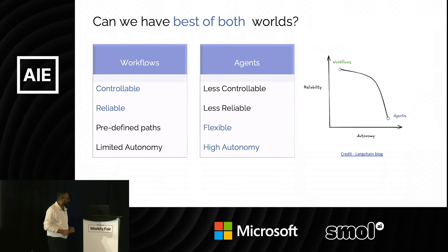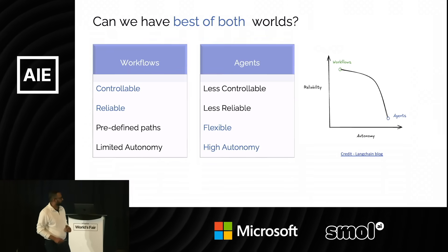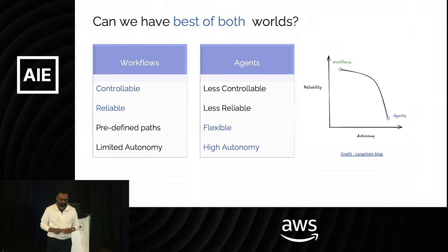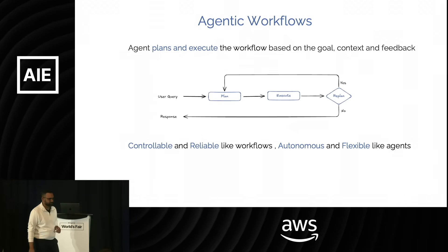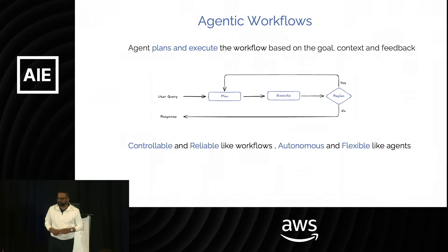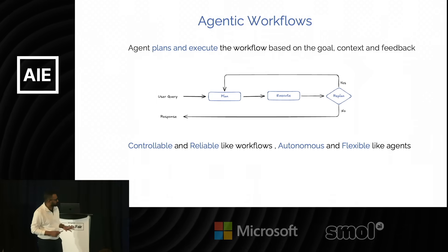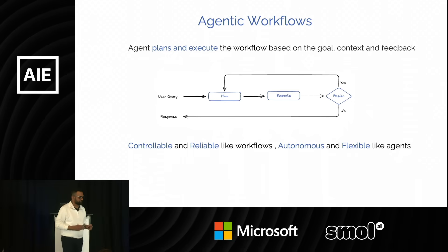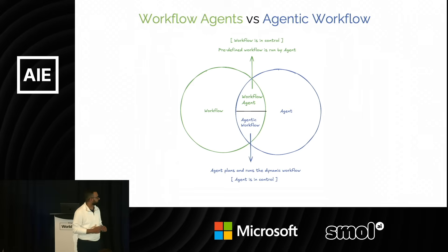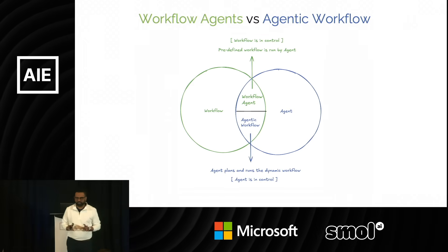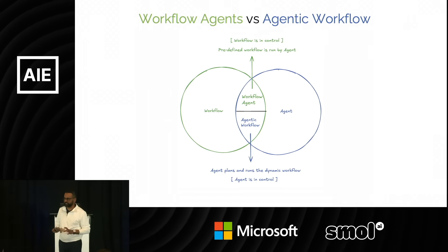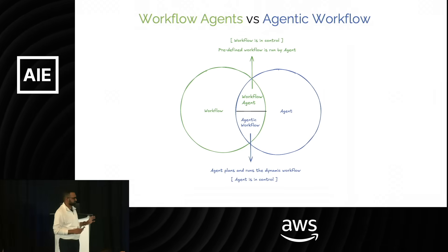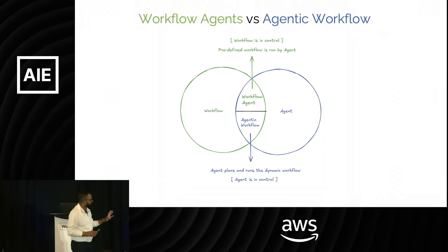Workflows are controllable and reliable, while agents have flexibility and are highly autonomous. So the question is: can we get the best of both worlds? The answer is yes. With agentic workflows, we can plan and execute workflows based on the goal, context, and feedback. I see these terms used very loosely and at times interchangeably, so I'd like to make a key distinction between workflow agent and agentic workflow.